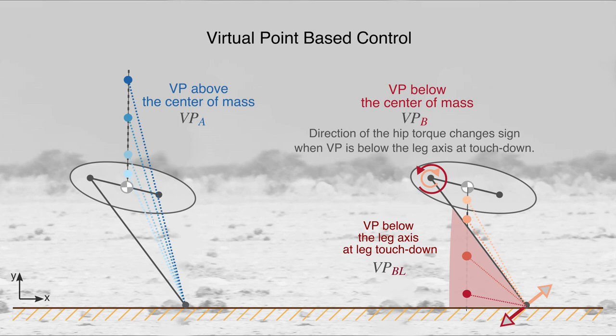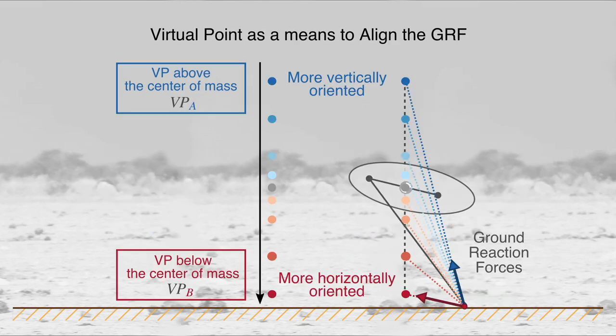Consequently, virtual points below the leg axis create yet another parameter region, which we refer to as VPBL. The virtual point concept can be viewed as a means to change the orientation of the ground reaction force vector. From this perspective, virtual points above the center of mass yield more vertically oriented ground reaction force vectors, and virtual points below yield more horizontally oriented force vectors.